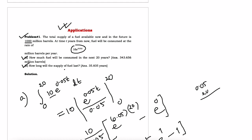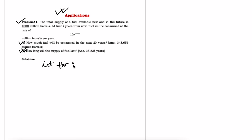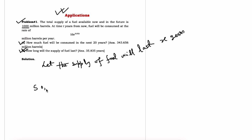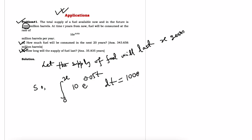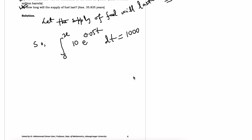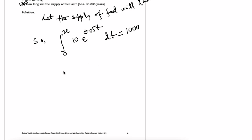Part B: how long will the supply of fuel last? Let the supply of fuel last x years. According to the question we write the integral from 0 to x of the rate function 10e to the power 0.05t dt, set equal to the available supply of 1000 million barrels.